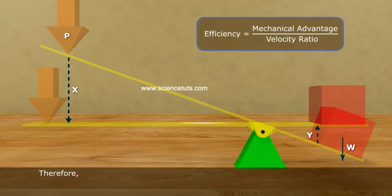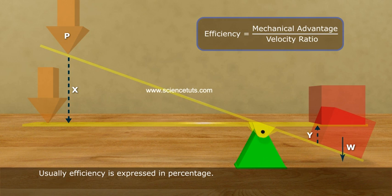Therefore, efficiency is equal to mechanical advantage by velocity ratio. Usually, efficiency is expressed in percentage.